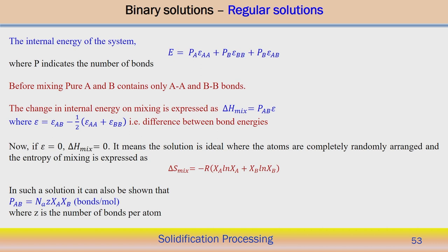The internal energy of the system is simply represented in terms of bond energies between atoms: E = P_AA·ε_AA + P_BB·ε_BB + P_AB·ε_AB, where capital P indicates the number of bonds and ε indicates the bond energy associated with each particular bond. It should be P_AB (not P_B) for the number of bonds between atoms A and B. This gives the total internal energy of the system.